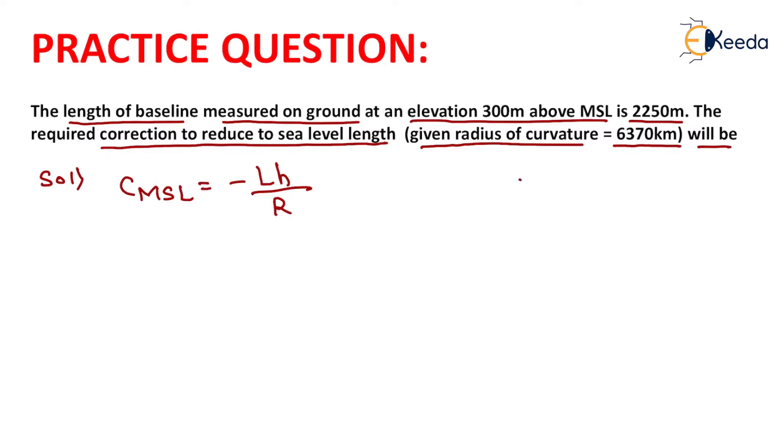Here the value of L is 2250 meter, so we will convert this value into kilometer, it will be equals to 2.25 kilometer. Now the value of H is 300 meter which is given in the question and the value of R is 6370 kilometer.